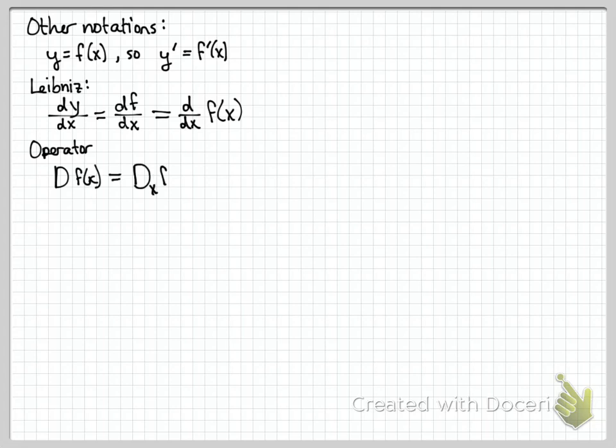You can also use so-called operator notation. We won't use this much, but a capital D can also mean take the derivative. So D f of x means take the derivative of f of x. And if you want to be really clear that the variable you're dealing with is x, you write d subscript x f of x. That means take the derivative with respect to x of f of x. And that's the rate of change of the function f compared to x.